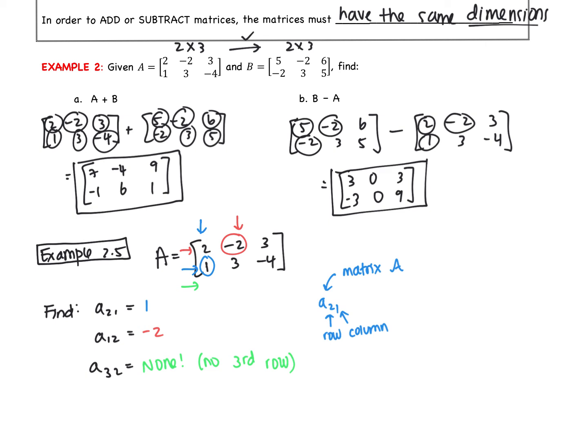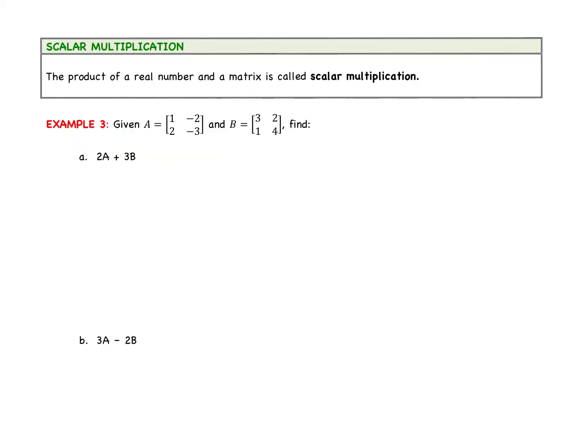Last thing. Go to the next page, please. We are going to discuss scalar multiplication. Scalar multiplication. Here's the deal with scalar multiplication. It is the product of a real number and a matrix. Product of a real number and a matrix. So we are going to do two examples and then these notes are done.